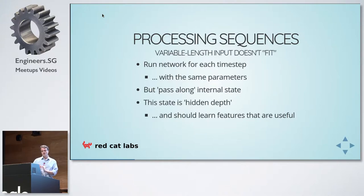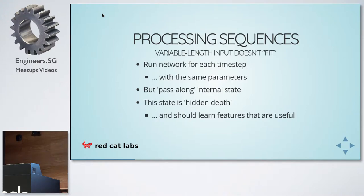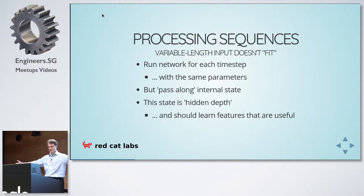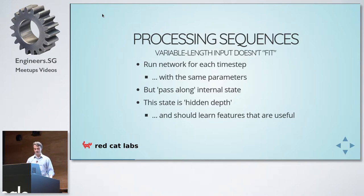Even though we don't know what the hidden state should represent, this thing will learn to have a nice internal representation because you incentivize it through the blame game. If I've got an answer at the end I'm trying to get to, I assign blame — that blame propagates backwards through time. If I want to blame the very first word in the sentence, I will have a very deep network to deal with. In a sense, time is depth. Hopefully we can learn some useful internal features, and it turns out that this often happens.